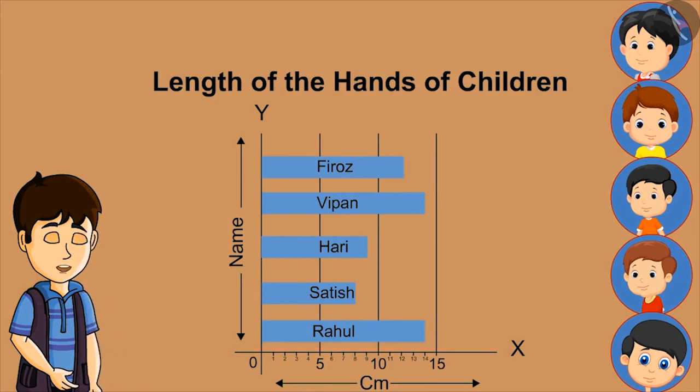By closely looking at this, can anyone tell me who has the longest hands? Rahul and Vipan. How long? 14 cm. Absolutely right.